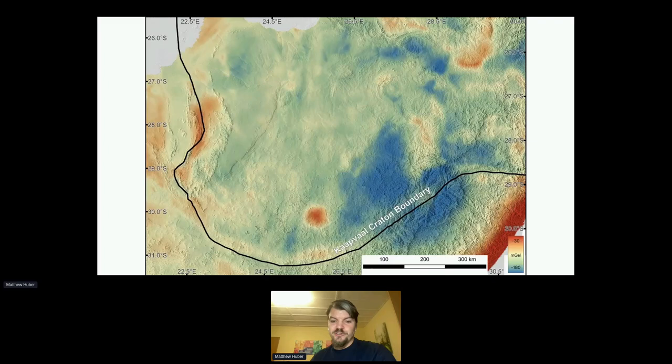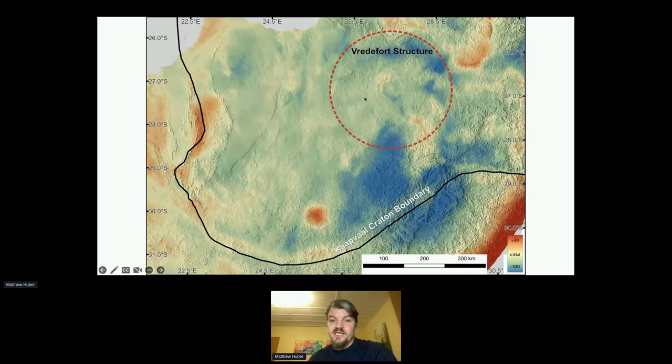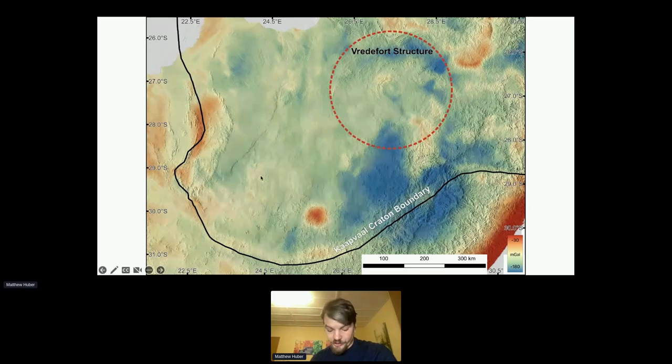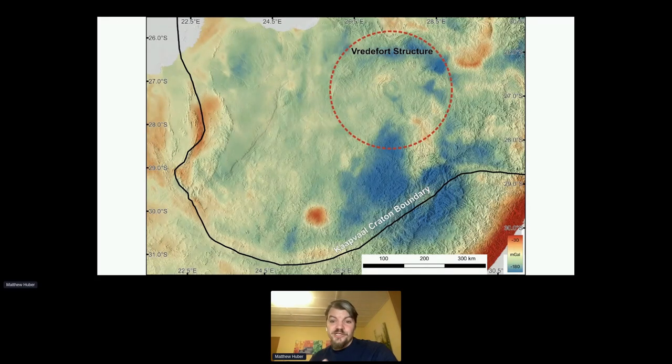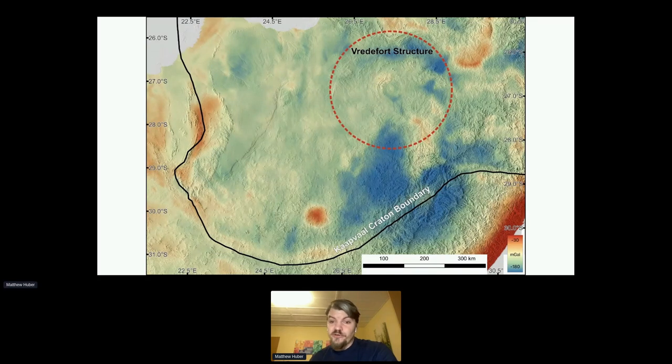If we look at the Kapvaal Craton in South Africa, Vredefort is on the Kapvaal Craton and you can definitely pick out where Vredefort is. If you spot it, Vredefort is up here. It is an anomaly to be sure, but it is not even nearly the largest anomaly on the Kapvaal Craton and could easily be mistaken for something else or even entirely overlooked.